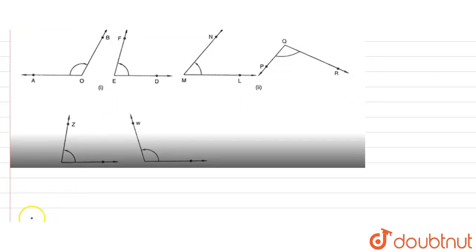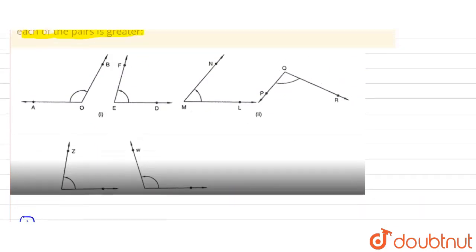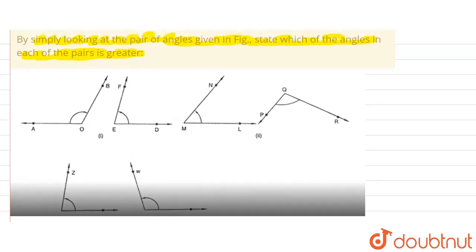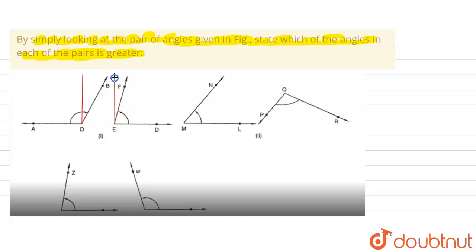Let's see the first pair. We can draw an imaginary 90 degree line so that we can identify which one is greater. Suppose this is 90 degrees for angle AOB and this is 90 degrees for angle EFD. We can recognize that angle FED is an acute angle because it is smaller than 90 degrees, and angle AOB is greater than 90 degrees, therefore it is an obtuse angle.